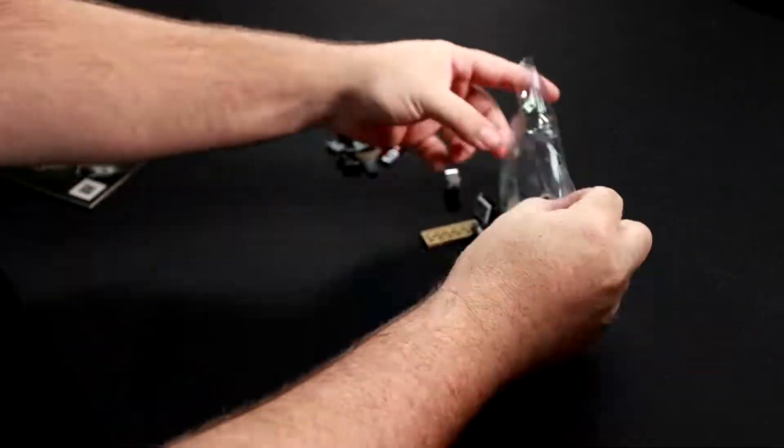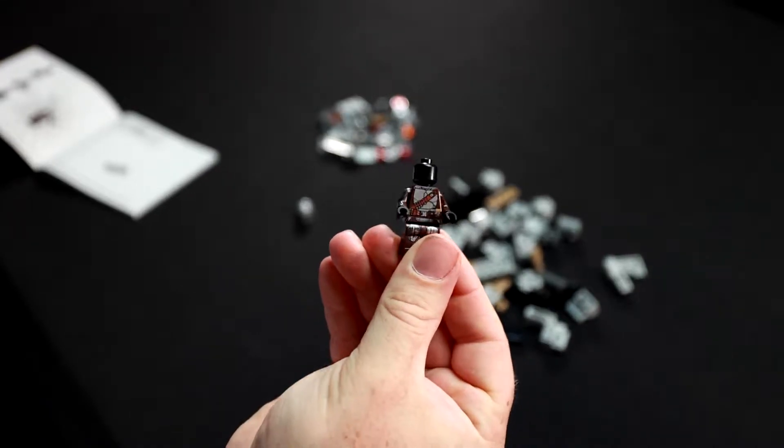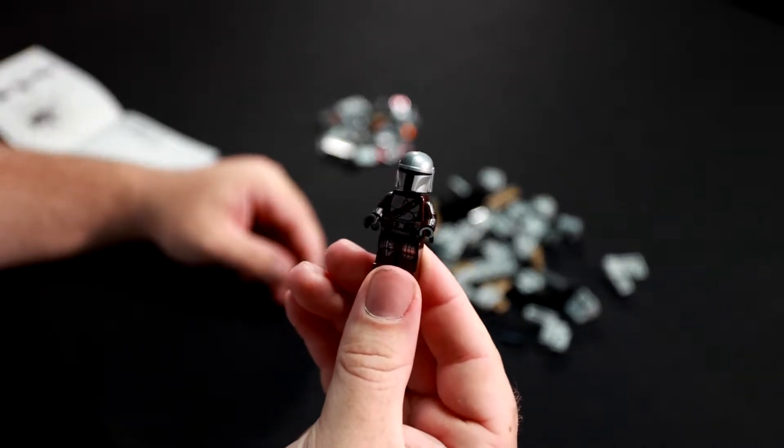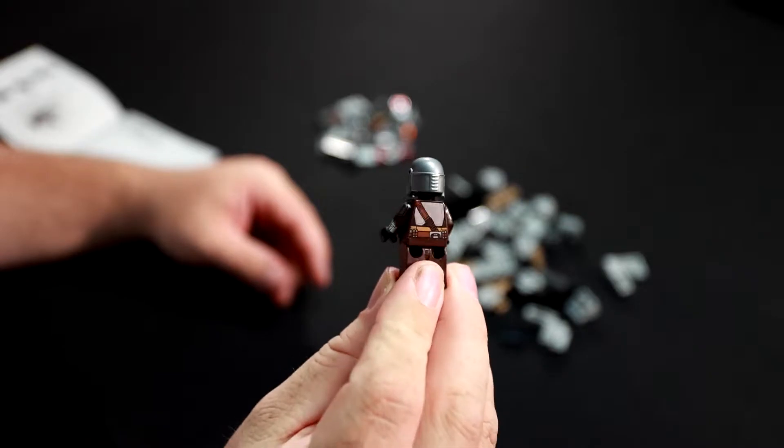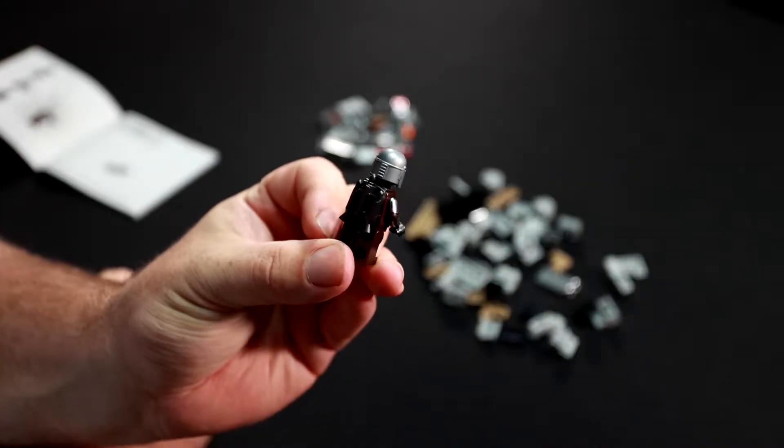So we're just going to jump straight into the building and we start with our minifig. Where's his face gone? It's just pure black. Oh wait, there we go, there's the helmet. Okay, so we're getting the character together. I forgot the jetpack, oh no, there it is.